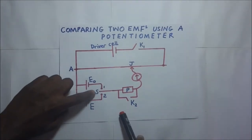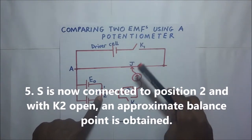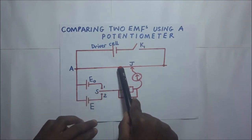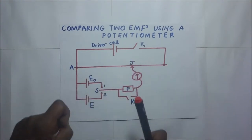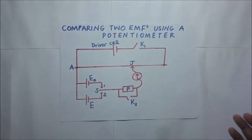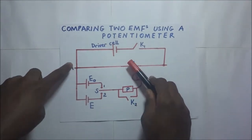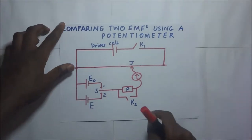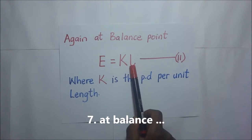After getting our first equation, we repeat the same procedure with switch S connected to position 2, switch K2 open, and switch K1 closed. We tap the jockey along the wire to get an approximate balance point, then close K2 and slide the jockey again to get the accurate balance point. We record the accurate balance length, calling it L. The second equation is: E equals the PD per unit length times L.